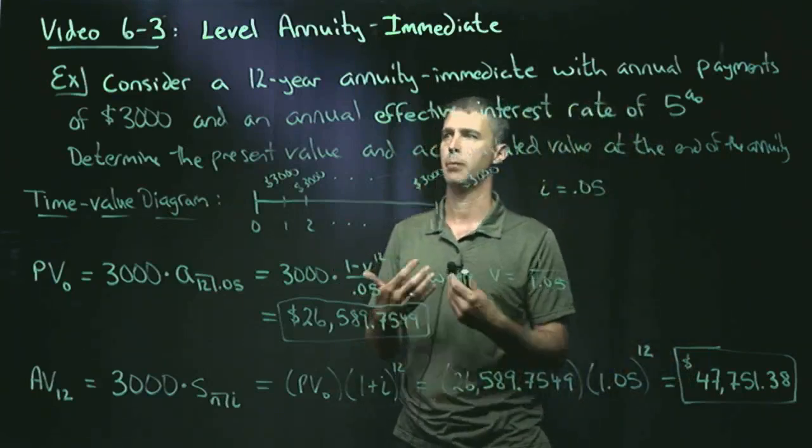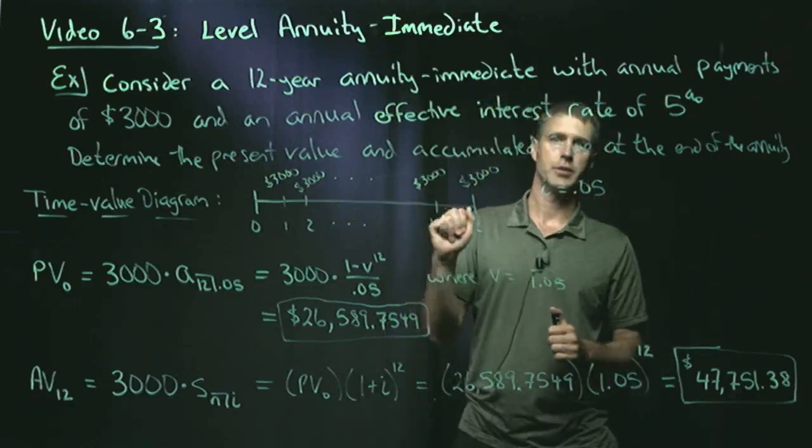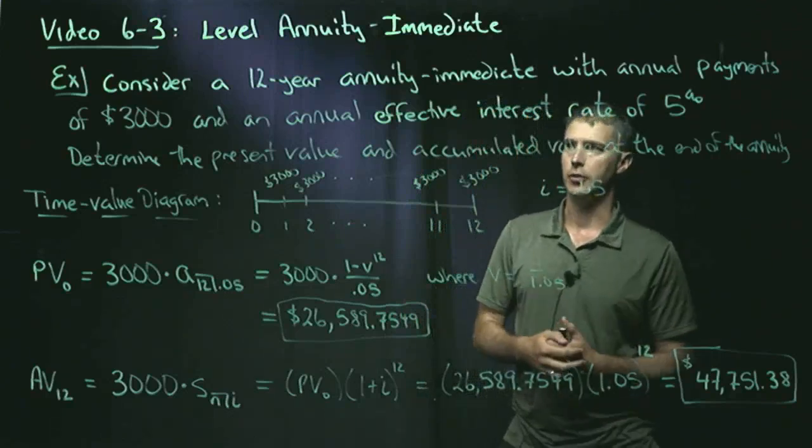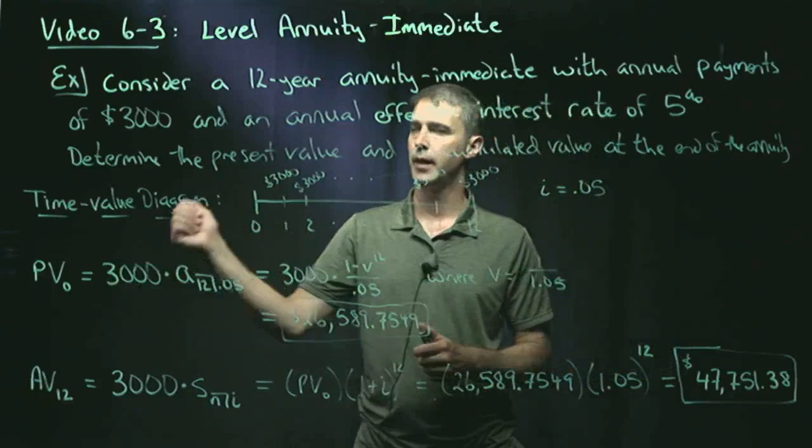annual effective, period effective. We'd like to determine the present value of this annuity and the accumulated value at the end of the annuities period. So in other words, we'd like to calculate PV0 and AV12.